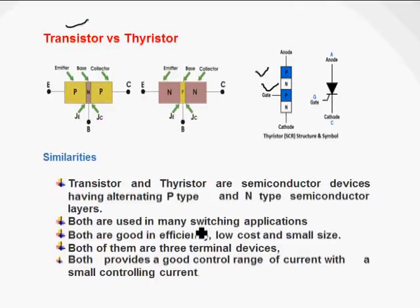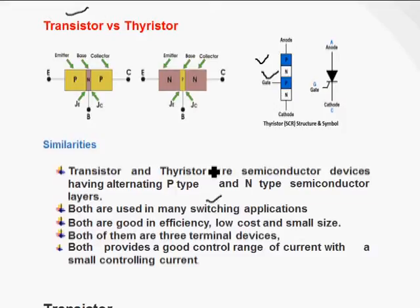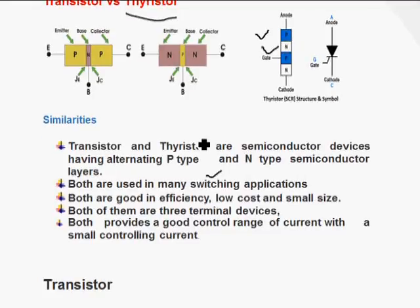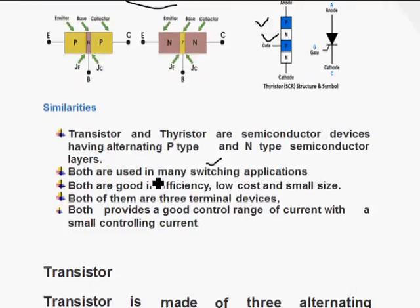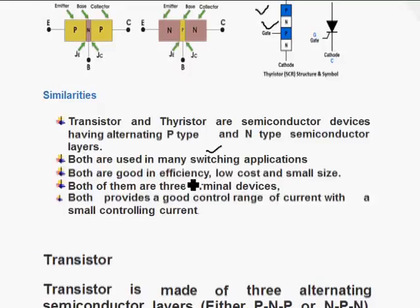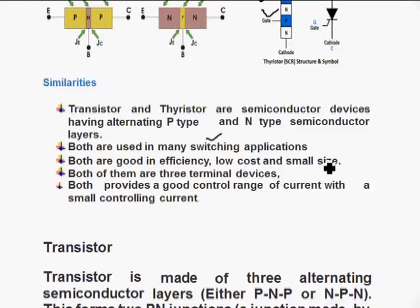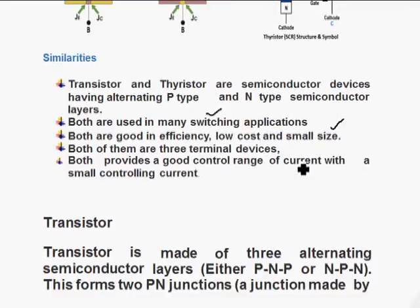Both are switching devices. They are used as switches. Like a mechanical switch we make on and off, here electronically we make on and off. We are using the thyristor and transistor as switch because both having good efficiency. Both are low cost, both are small in size, and both are efficient devices.